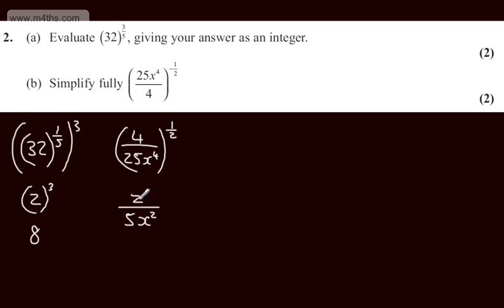So we can write 2 over 5x squared, or if we like, 2 fifths x to the power of minus 2. Lots of different approaches on part B. The final answer will look something like one of these two. And the question will carry two marks.